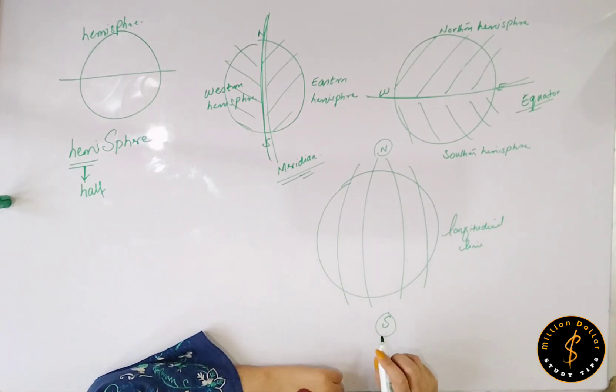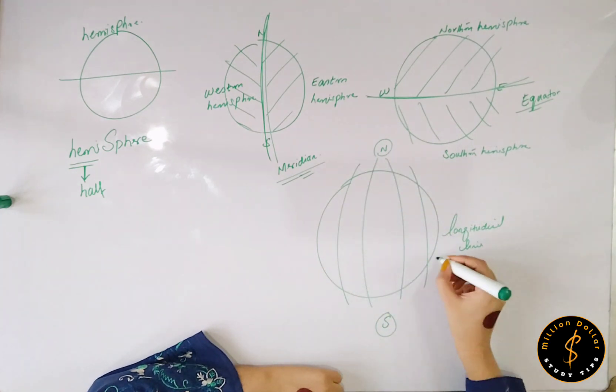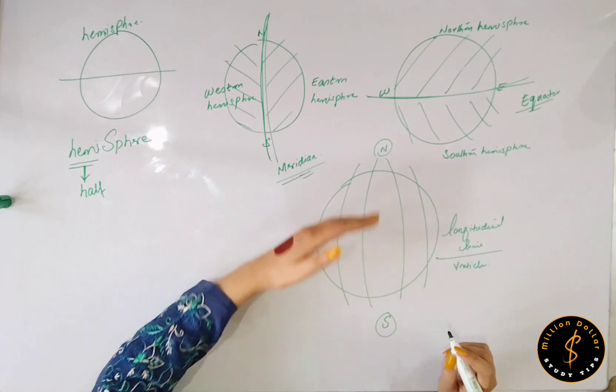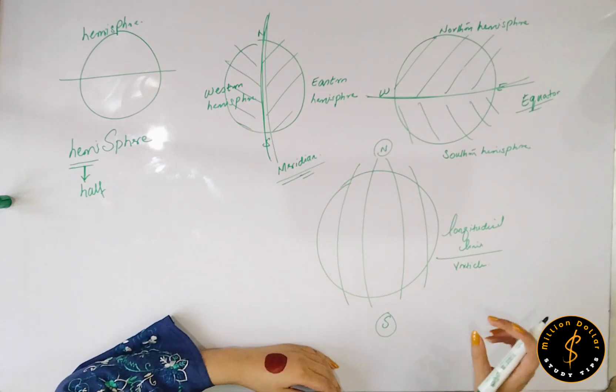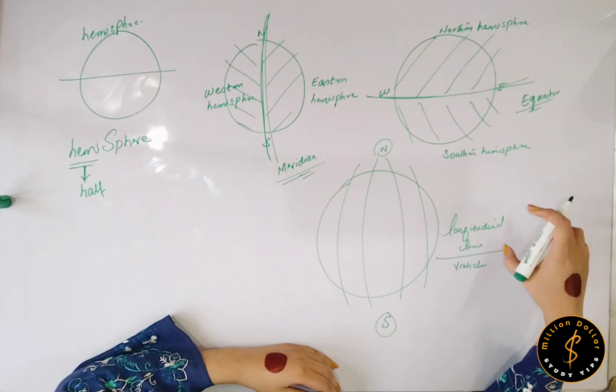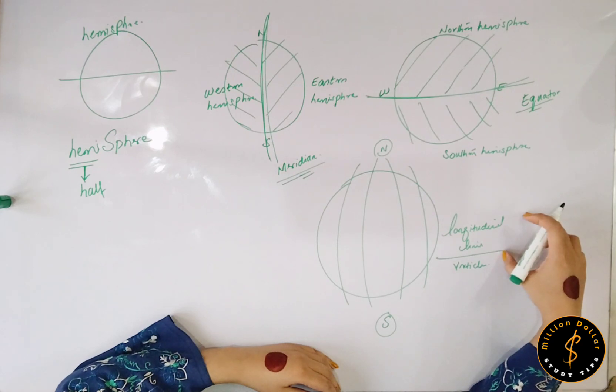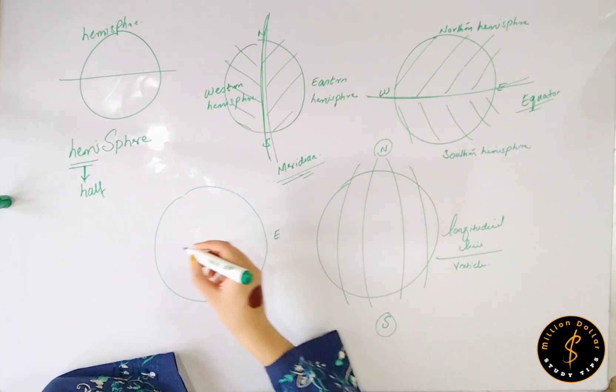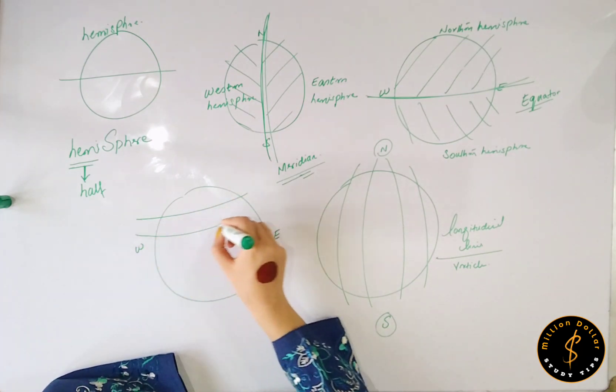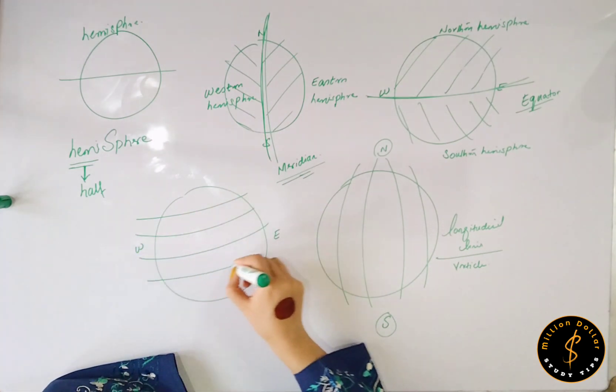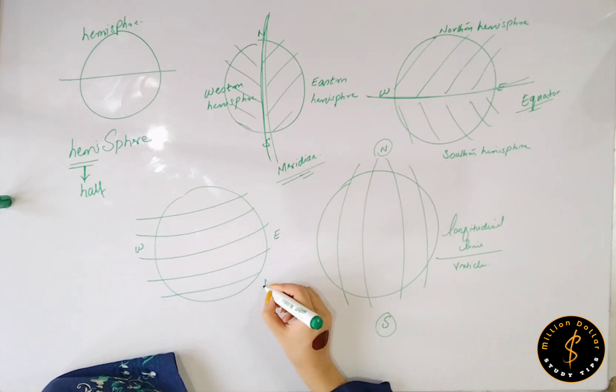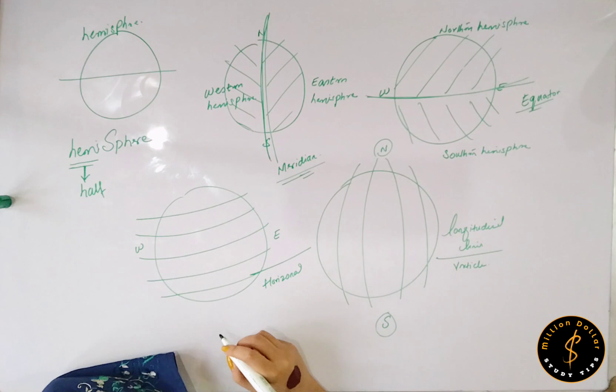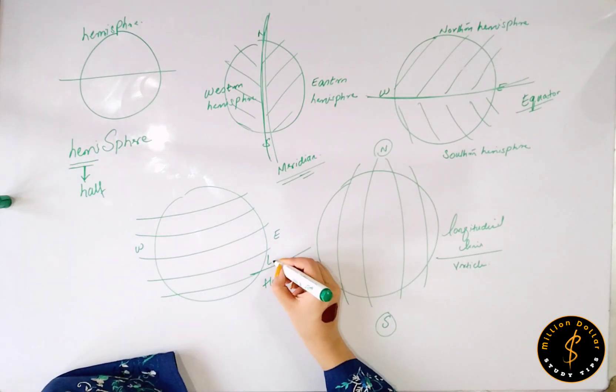These are vertical lines that we draw from north to south. Obviously, those are your longitudinal lines. And the lines we draw from east to west, those imaginary lines, are known as latitudinal lines.